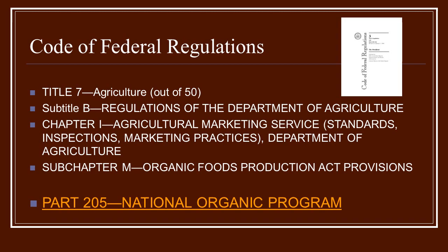The National Organic Program Standards are found underneath the Code of Federal Regulations, the CFR, which is the United States complete rules and regulations for all the different departments and areas that can come under Federal Regulation. There are 50 different titles. Agriculture is under Title 7.